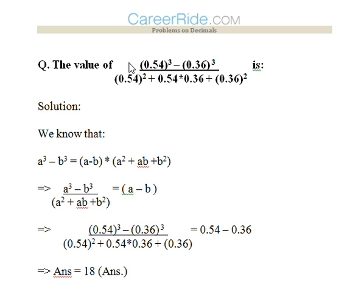So let's approach the first question. We have to find the value of (0.54)³ - (0.36)³ upon (0.54)² + 0.54 × 0.36 + (0.36)².